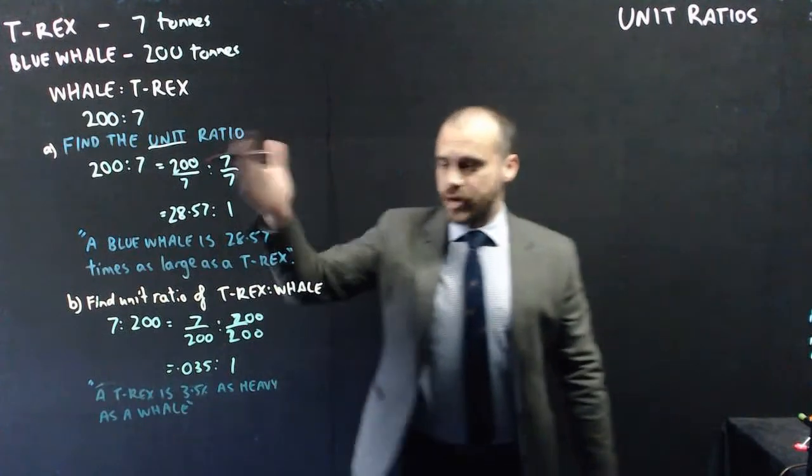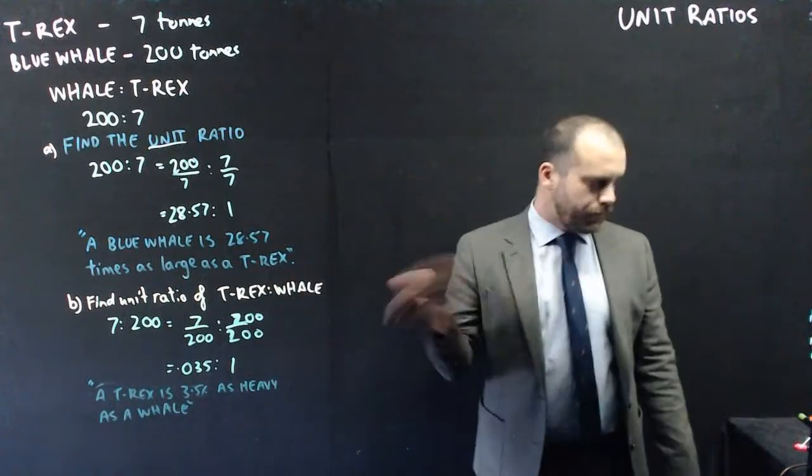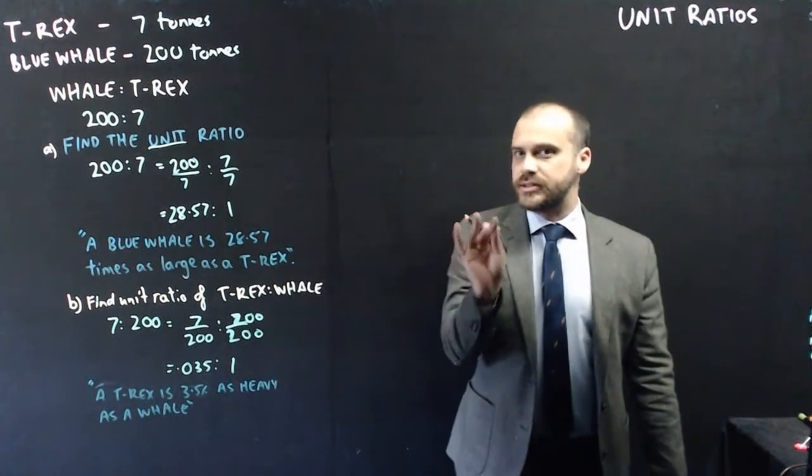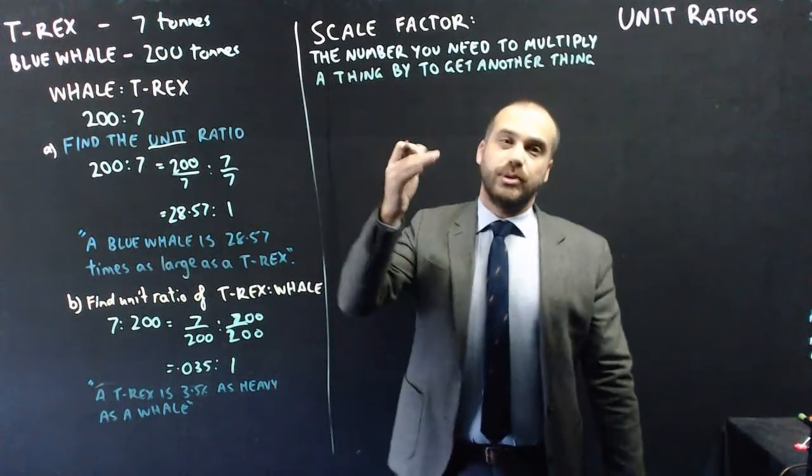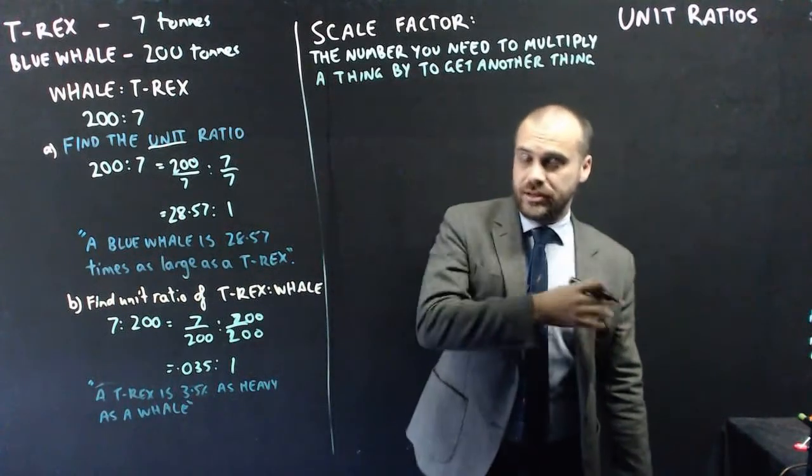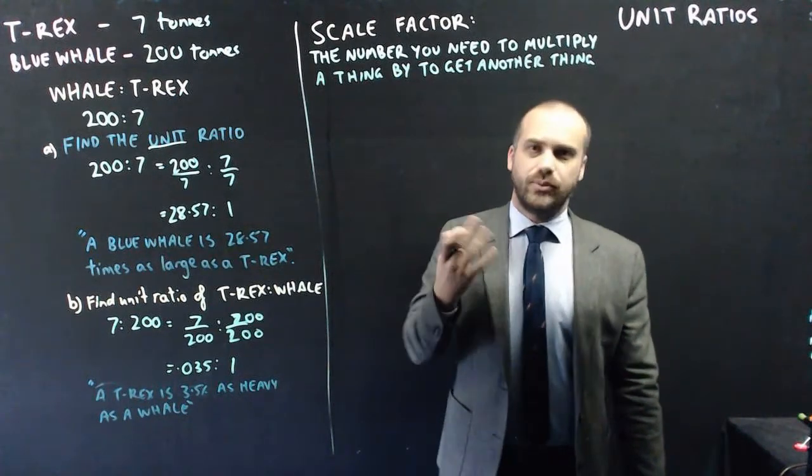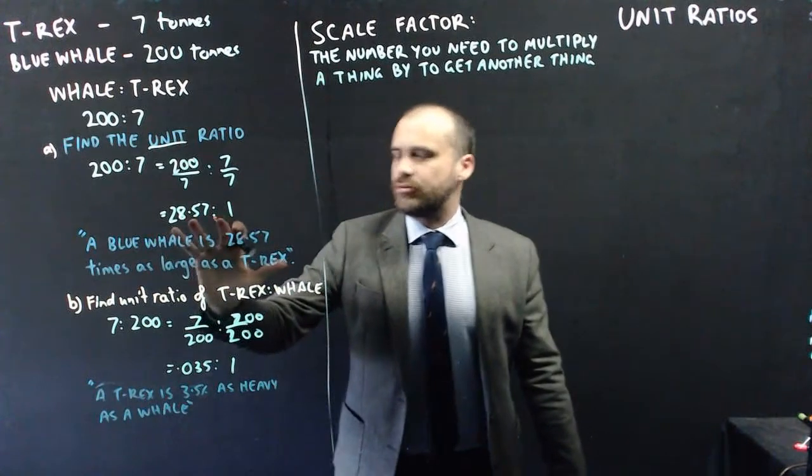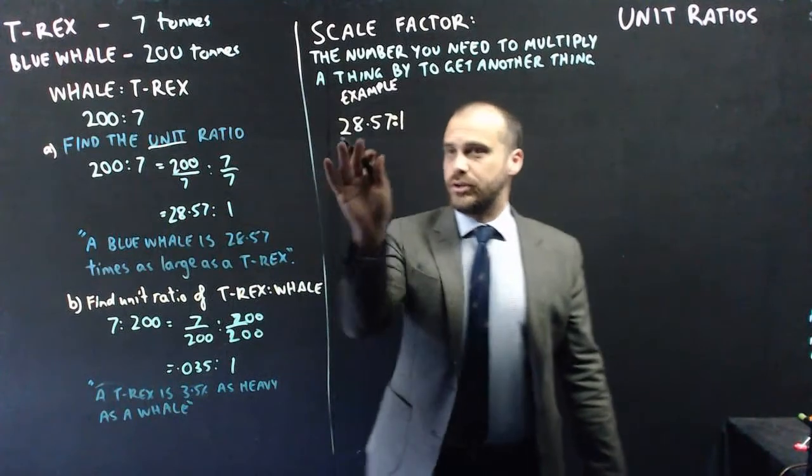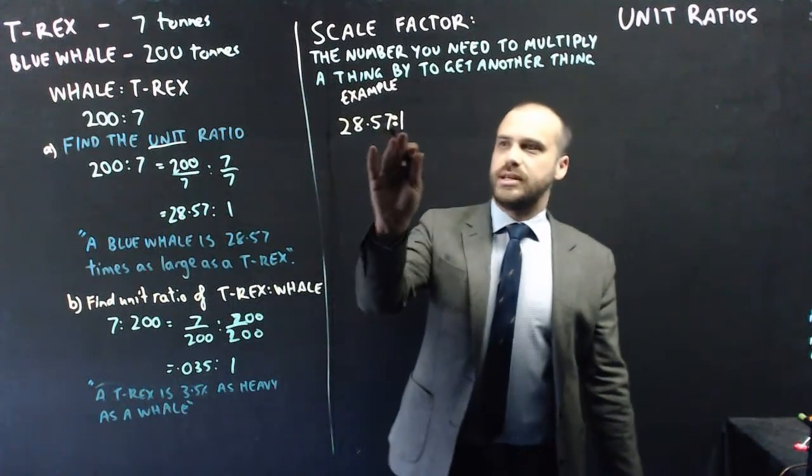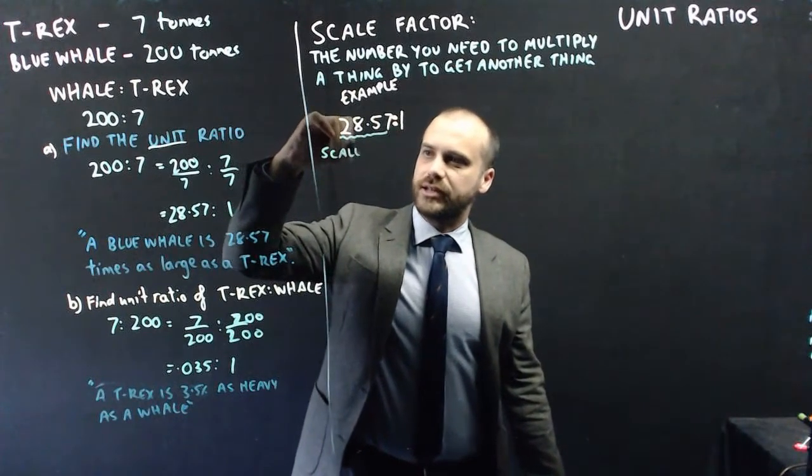So, as you can see, unit ratios are really good for making comparisons between two objects. But they're also really useful for finding something called the scale factor. A scale factor is the number you need to multiply a thing by to get another thing. That's a really loose definition. It's better if you see how it works. Let's use our unit ratio here between the whale and the T-Rex. If you have a ratio like this, 28.57 is to 1, this number here is called your scale factor.